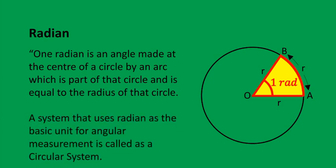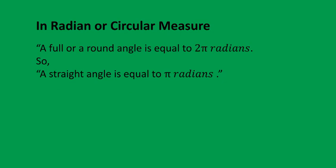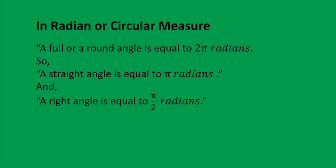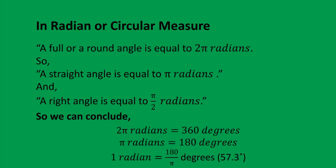A system that uses radian as the basic unit for angular measurement is called the circular system. In radian or circular measure, a full or round angle is equal to 2π radians, a straight angle is equal to π radians, and a right angle is equal to π/2 radians. So we can conclude: 2π radians equals 360 degrees, π radians equals 180 degrees, and 1 radian equals 180 divided by π degrees, which is approximately equal to 57.3 degrees.